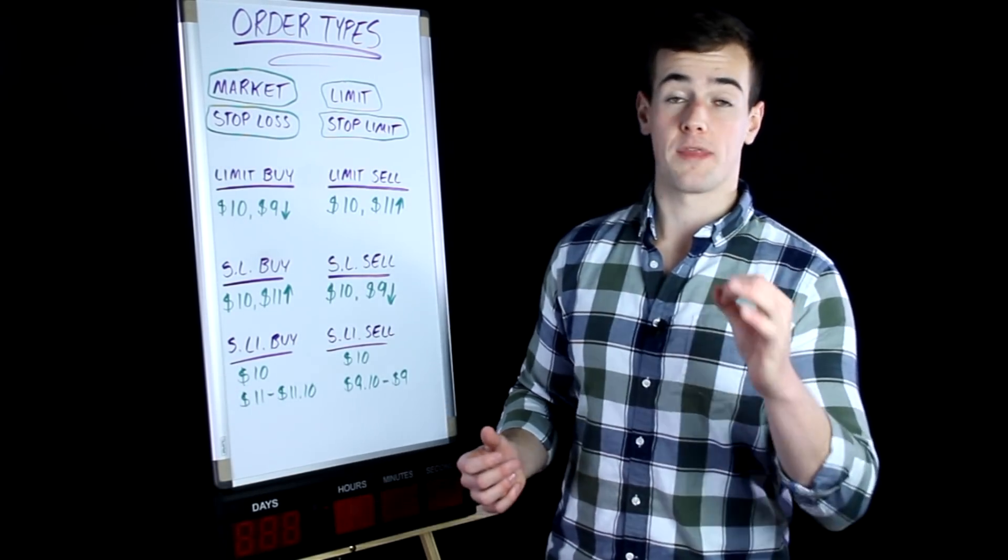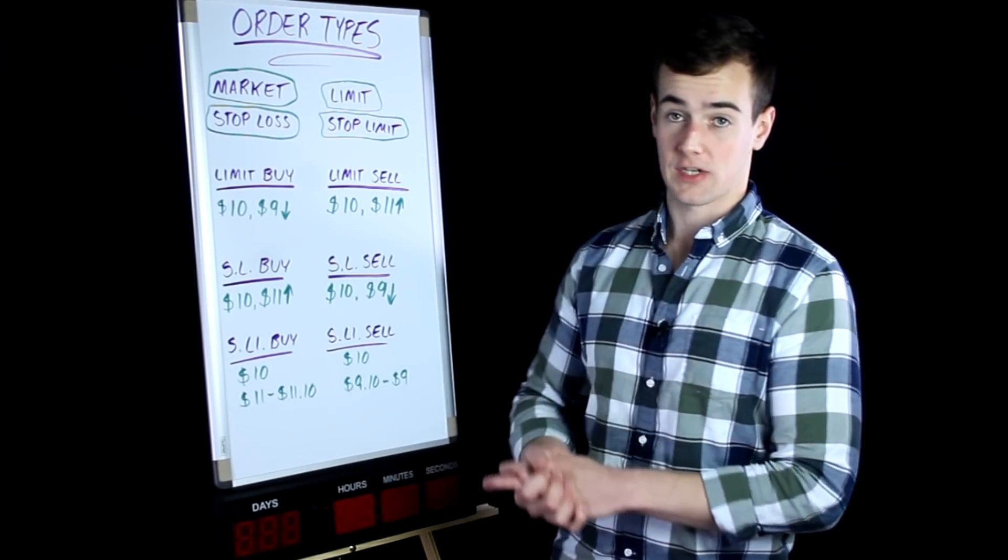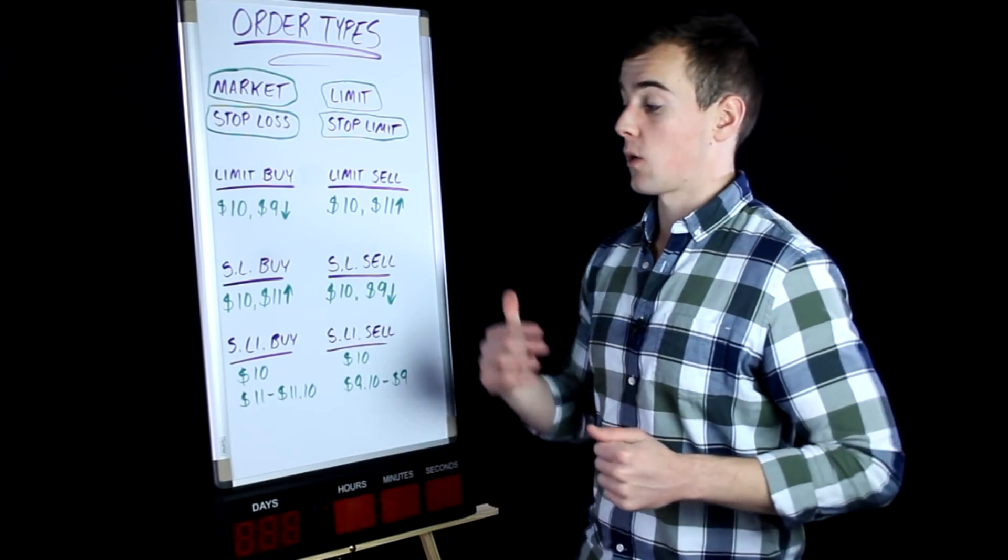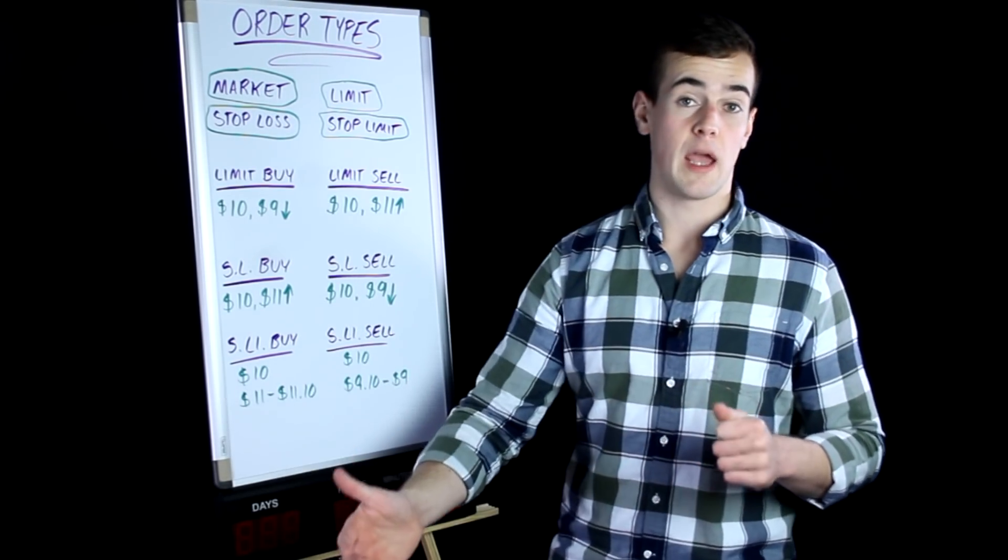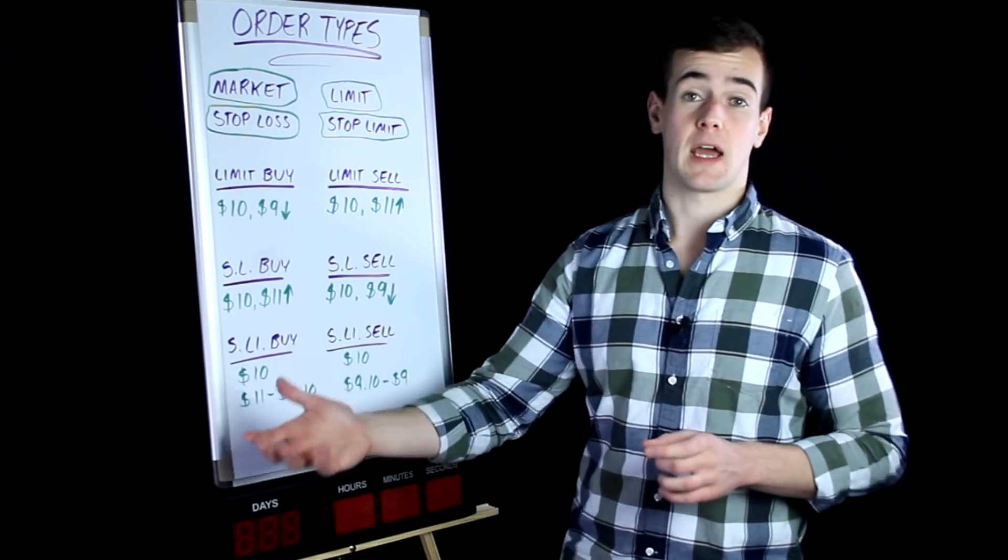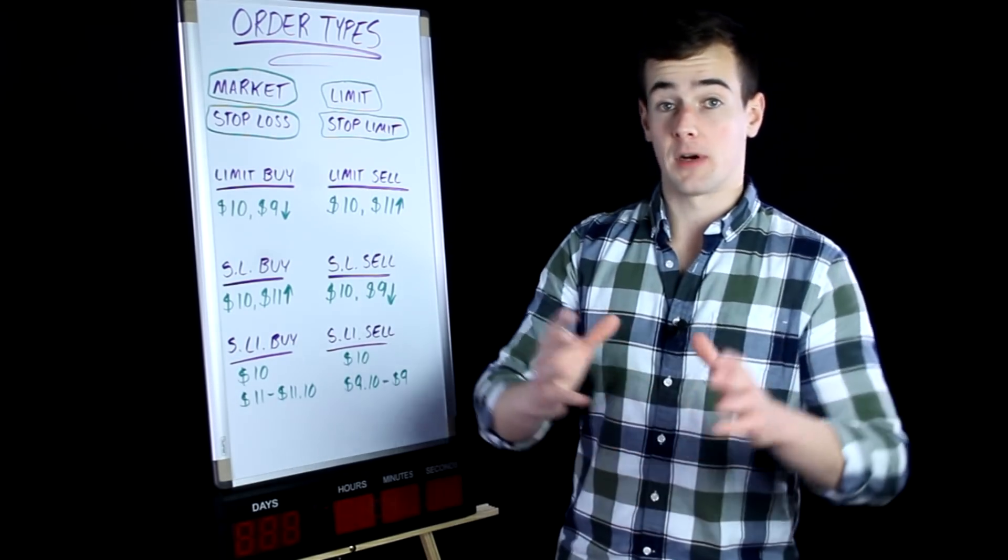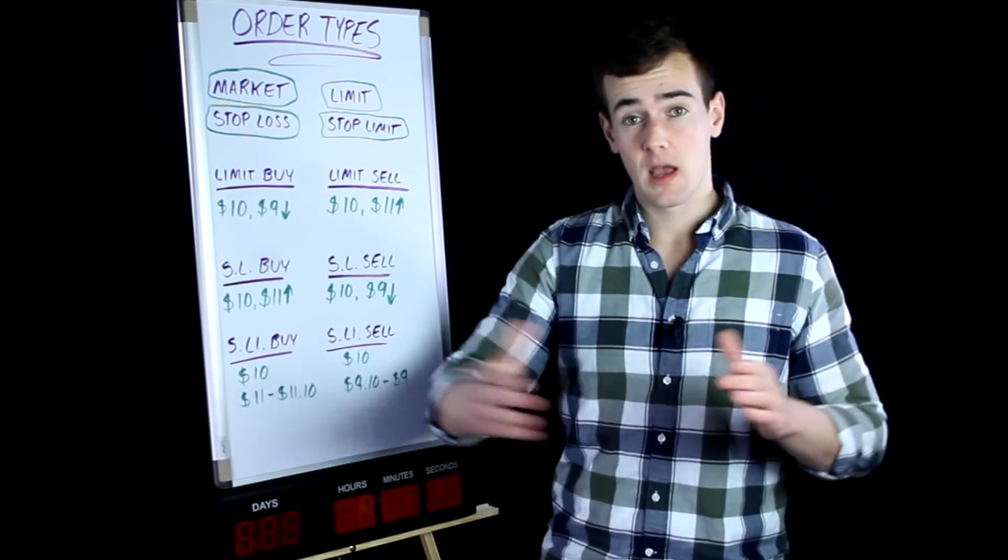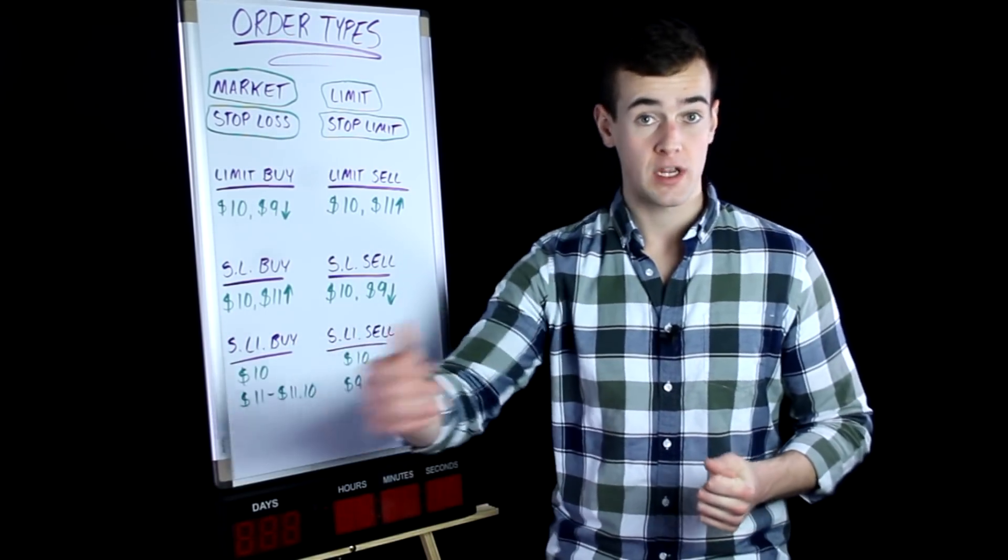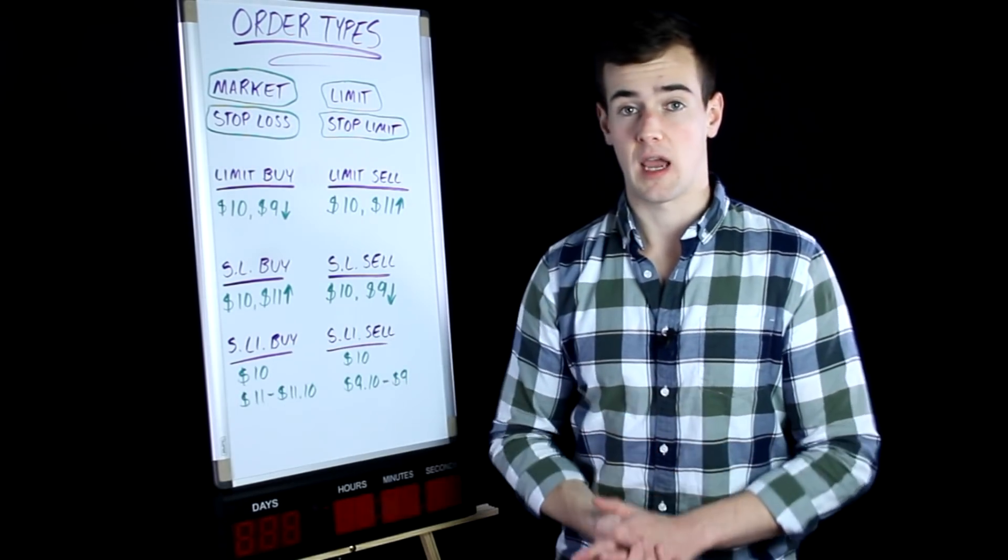So the final order is one that allows you to have gap protection and set a price range. And that is a stop limit buy and a stop limit sell order. So let's say you were doing a stop limit buy order. The stock was $10 a share and you were looking to pay between $11 and $11.10. That means that you would set that as your price range and if the stock was in between that at any point in time, the order would be executed. But if it never entered that range and just simply shot past it, so let's say the stock gapped open from $10.50 a share to $12, then that order would not be executed because it never traded between $11 and $11.10.